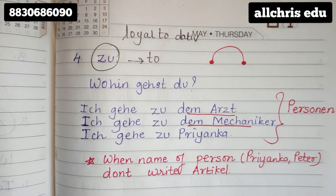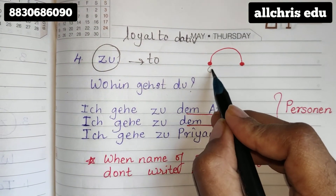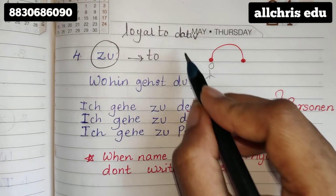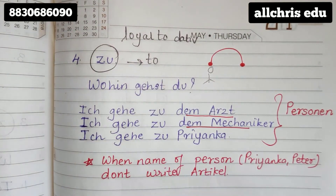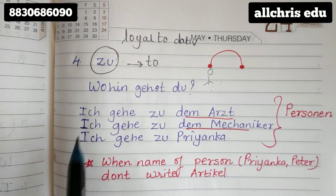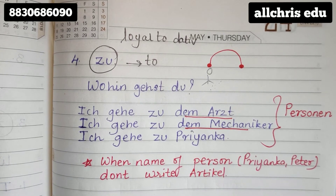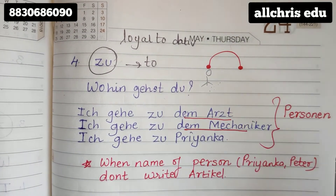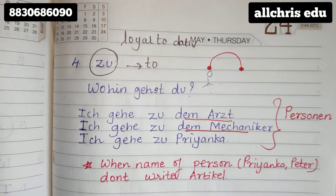As you know, 'zu' is a dative preposition — very loyal to the dative case. In this context you are in the process of going. Here is a person going somewhere. We ask 'Wohin gehst du?' — where are you going? He says, 'Ich gehe zu...' Now 'zu' can also be used for Personen — for people, for the name of a person.